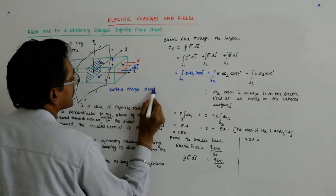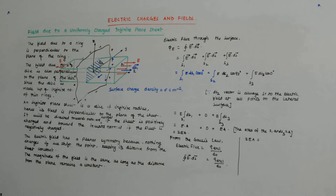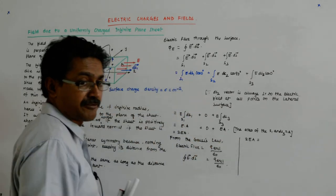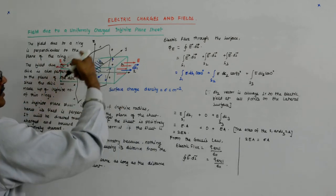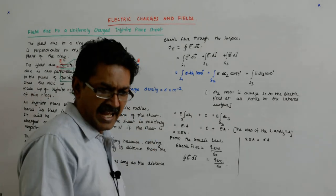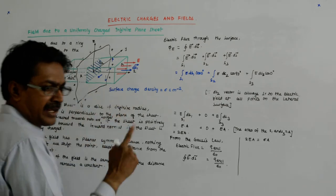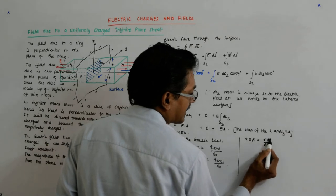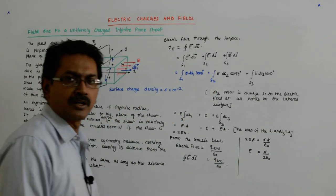Taking surface charge density as sigma coulombs per meter squared, 2EA equals sigma times A divided by epsilon naught. The area A cancels on both sides, giving E equals sigma upon 2 epsilon naught. This matches the result we had obtained earlier.